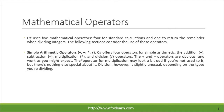C# uses five mathematical operators: four for standard calculations and one to return the remainder when dividing integers. Simple arithmetic operators include plus, minus, slash. C# offers four operators for simple arithmetic: the addition (+), subtraction (-), multiplication (*), and division (/) operators.